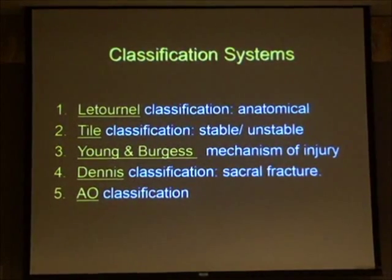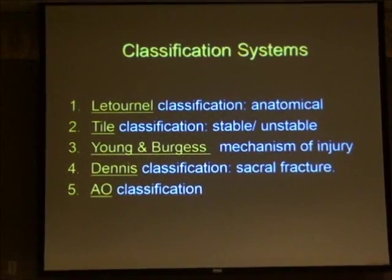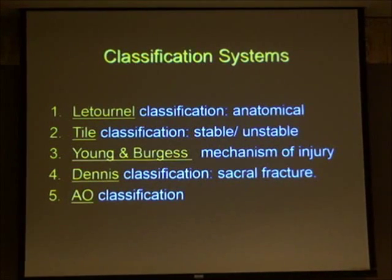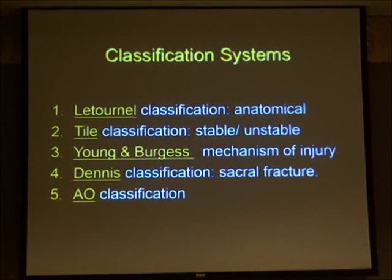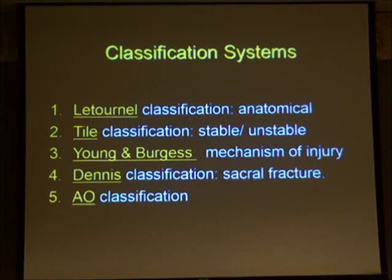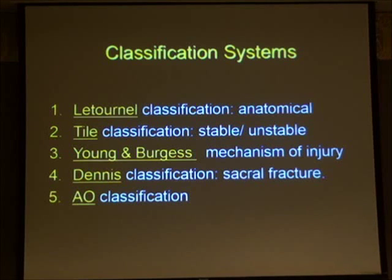There are various classification systems. There's the Letournel and AO classification, which is more anatomical-based. There's the Tile classification, which categorizes pelvic fractures into unstable and potentially unstable fractures. Then there's the Young and Burgess classification, which relates to the mechanism of injury. There's the Denis classification looking at sacral fractures and their anatomical location. And then there's the AO classification. We'll run through some of these in more detail.